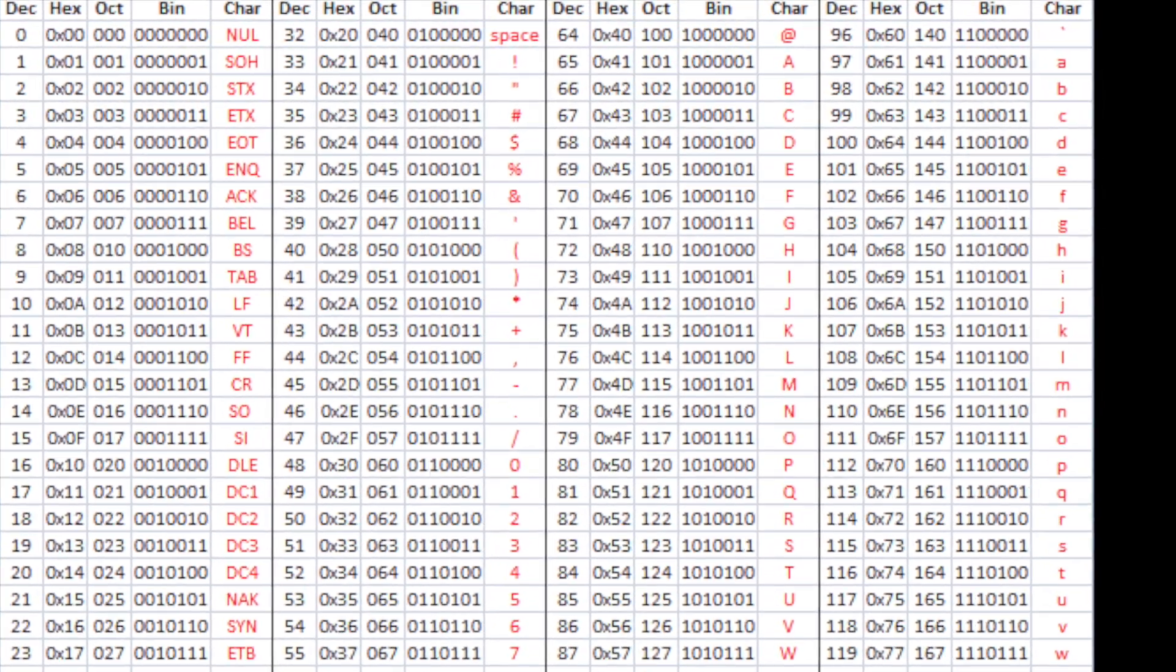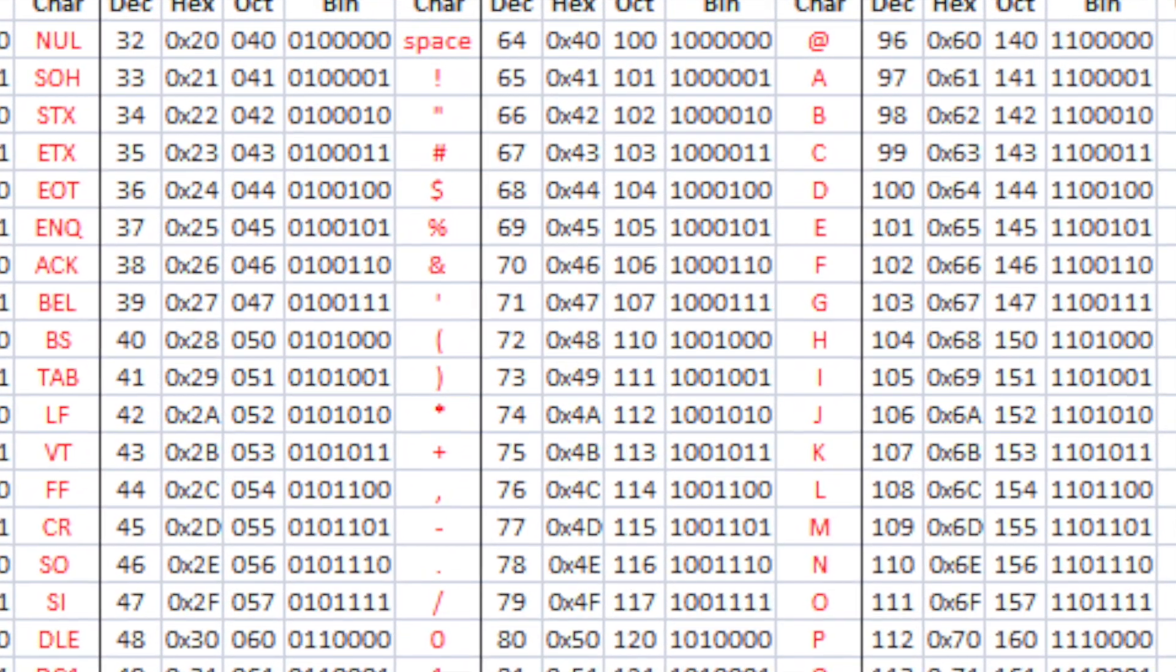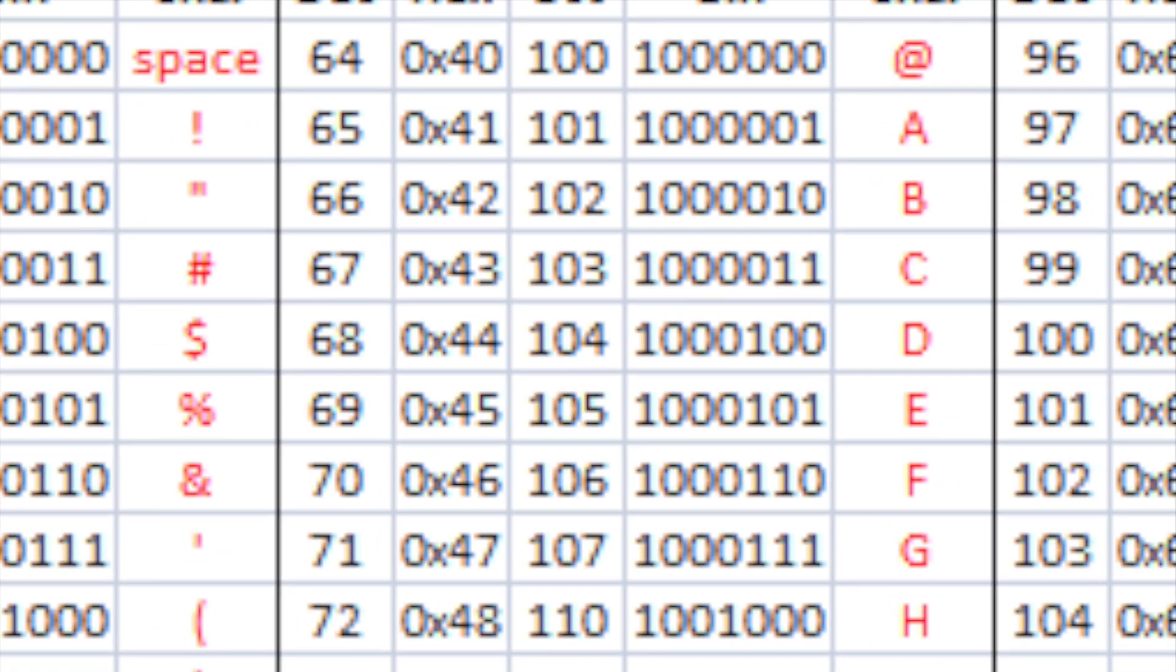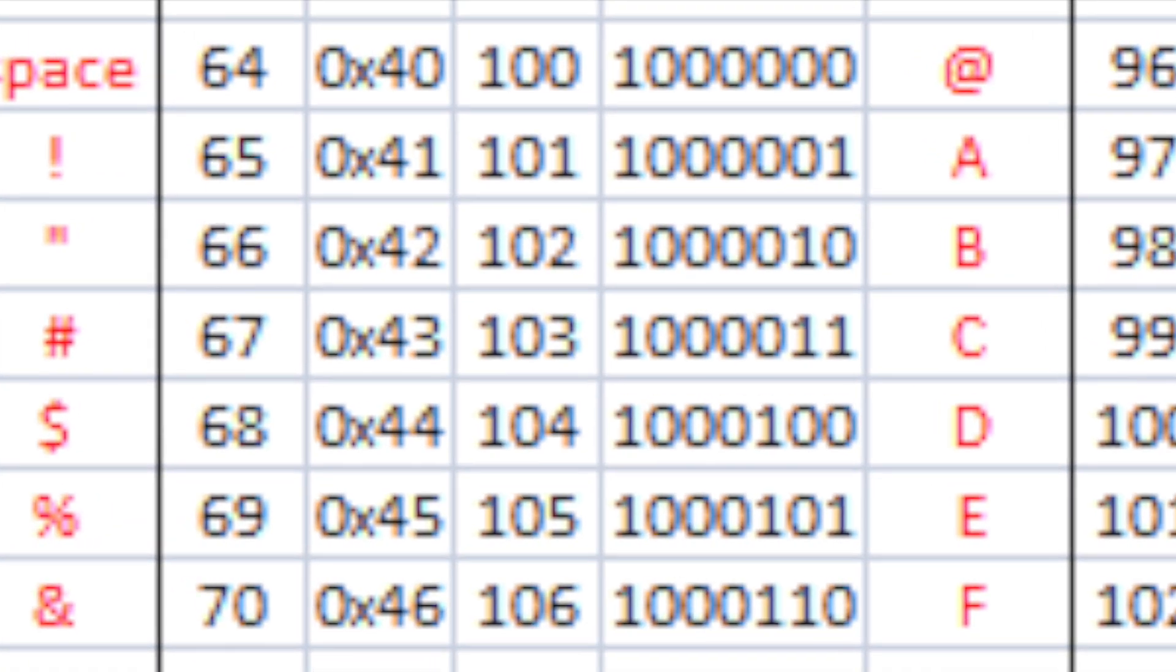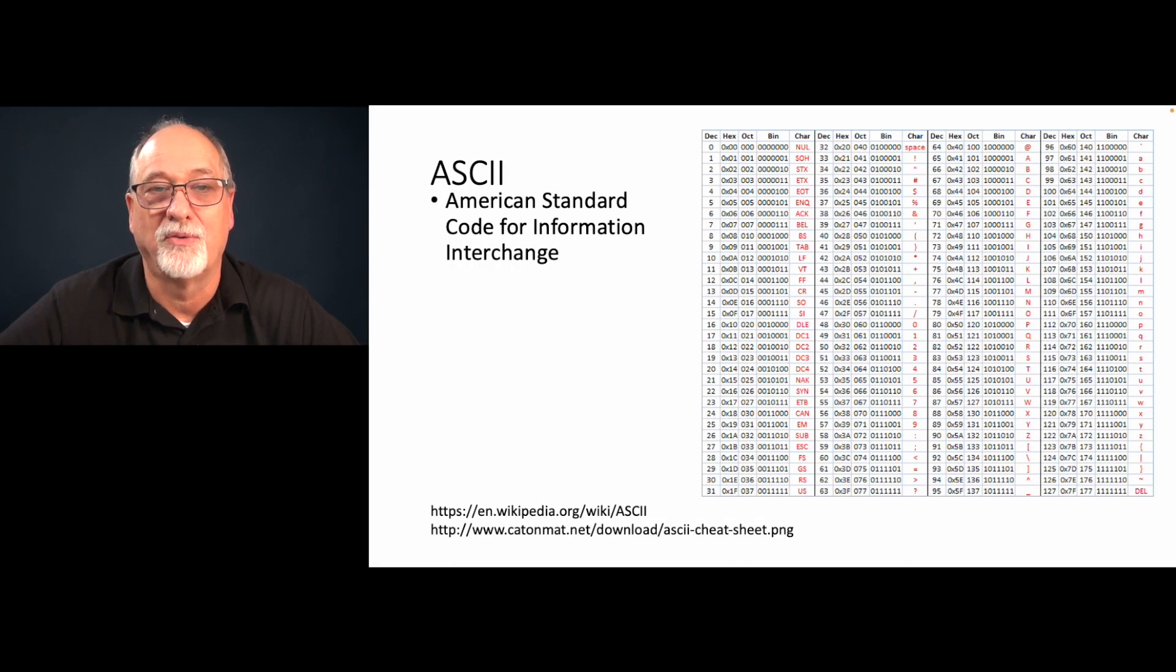The reason we like octal and hex as programmers is it's easier to convert directly. Converting from decimal requires divisions and modulo and stuff like that, but converting from octal or hex to binary is direct on a digit by digit basis. I can convert an octal digit to a binary set of binary digits just by looking at each digit in succession. When we're printing out and we want to be able to understand what the raw bit pattern is of some data, we tend to print it out in hex or octal so that we can quickly figure out what bits are set inside that value.